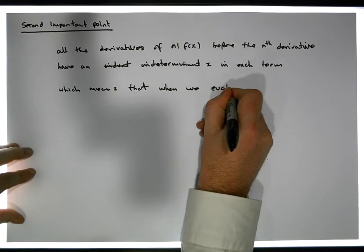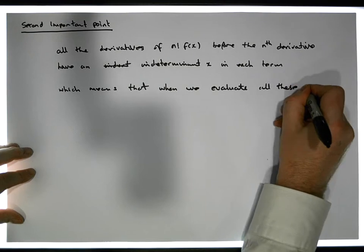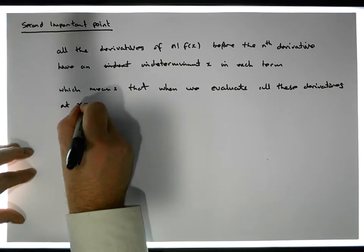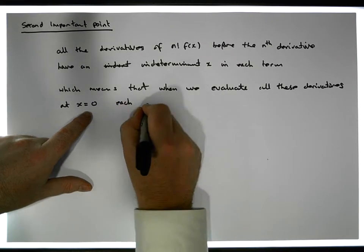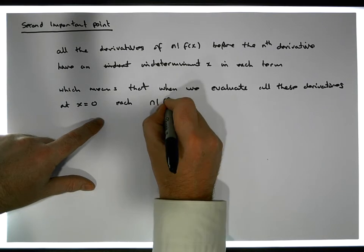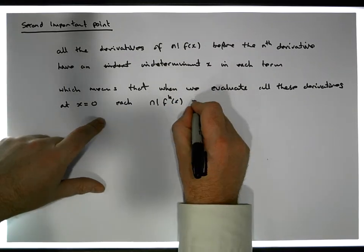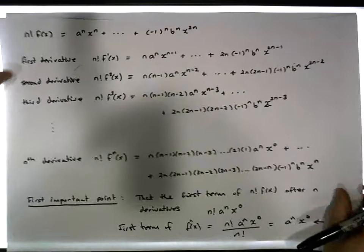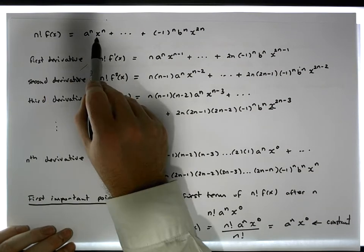When we evaluate all these derivatives at x equal to zero, each derivative — each kth derivative of f(x) — actually gives us zero. It goes to zero. That's a really important point. When I substitute in zero, that's going to be zero, and every single term is going to be zero.